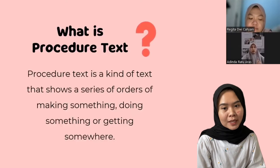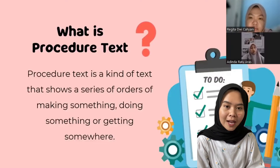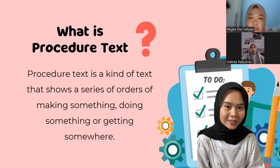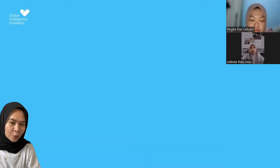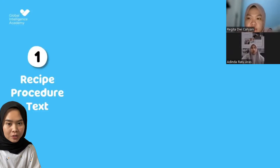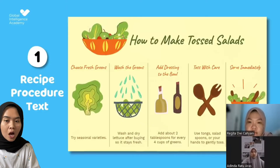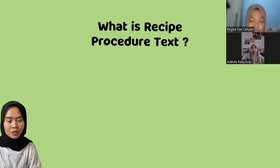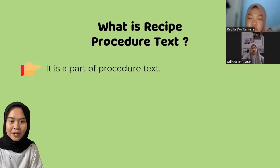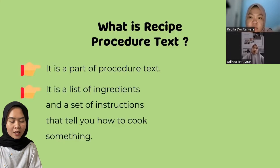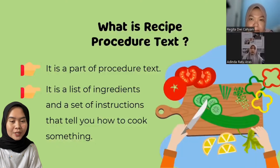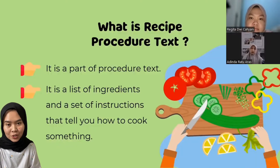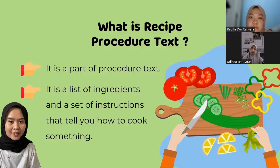Jadi, procedure text adalah teks yang berisikan perintah atau langkah-langkah untuk melakukan sesuatu. Type of procedure text yaitu Recipe and Manual. First, Recipe procedure text — for example, how to make fruit salad. Recipe procedure text is a part of procedure text; it is a list of ingredients and a set of instructions that tell you how to cook something.